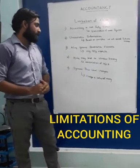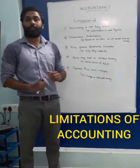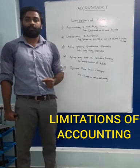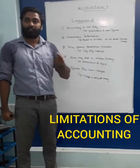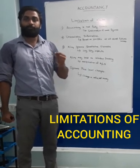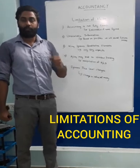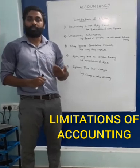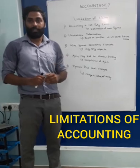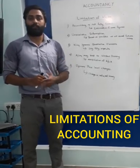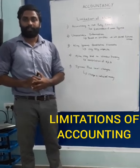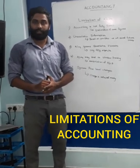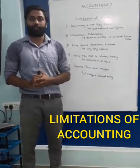The fourth limitation is that accounting may lead to window dressing, which means manipulation. The management can manipulate the accounts as per their requirements. For example, if they want to obtain a loan, they have to submit financial details, and they may manipulate the accounts to get loans. So accounting may lead to window dressing, and it may not show real information about the business.